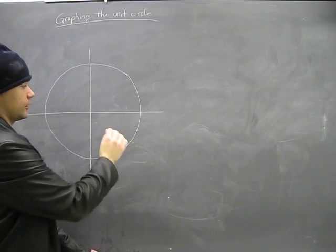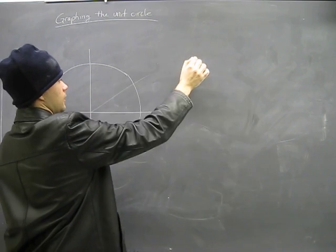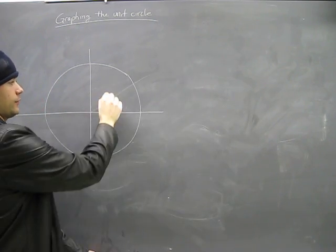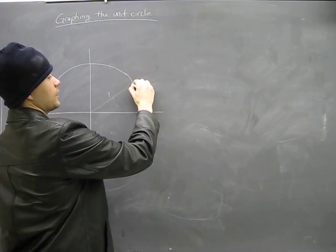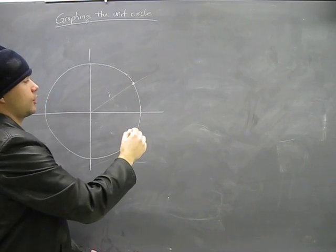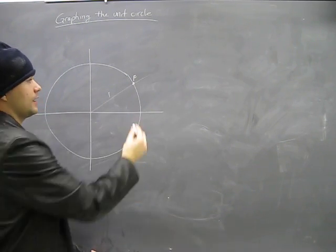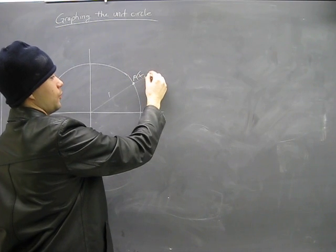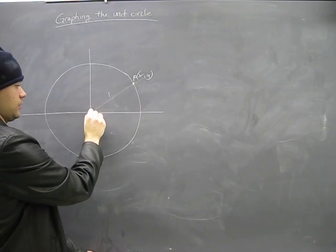Remember we said earlier, many videos ago, if you have a line, first of all the radius is one. When this arm crosses the unit circle, it creates a point, right? Every point is an xy point, everywhere you go.